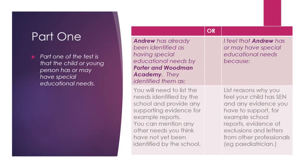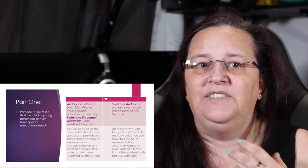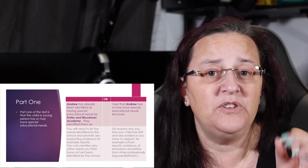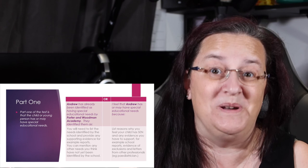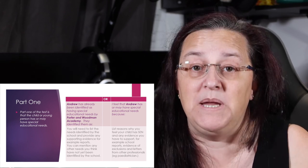Part 1 of that test is that the child or young person must have special educational needs. So you could write: 'Andrew has already been identified as having special educational needs by Porter and Woodman Academy,' and then list the needs that have been identified and any supporting evidence. You can also mention any needs that you think have not yet been formally identified. Or you could write something as vague as: 'I feel that Andrew may have special educational needs because...' — and this is where parents tend to find it much easier, talking about exclusions or things they're struggling with at home. We're trying to evidence why the child or young person has special educational needs — demonstrating evidence for the first part of the test.